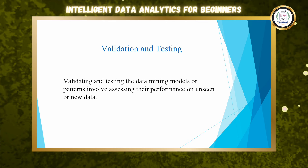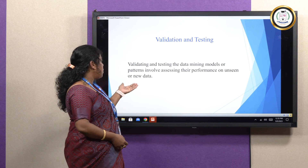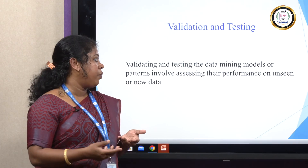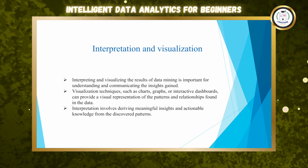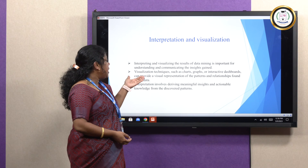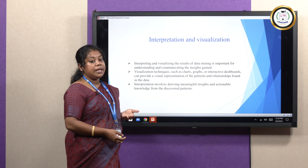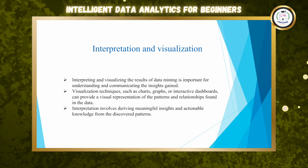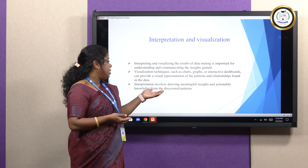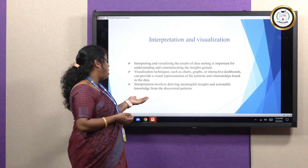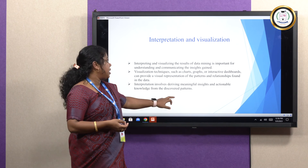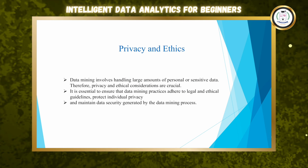Validation and testing is the final stage of the data mining process. It involves validating and testing the data mining models or patterns by assessing their performance on unseen or new data. Finally, interpretations and visualization involve interpreting and visualizing the results of data mining, which is important for understanding and communicating with clients. Visualization techniques such as charts, graphs, or interactive dashboards provide visual representations of the patterns and relationships found in the data, while interpretation involves deriving meaningful insights and actionable knowledge from the discovered patterns.